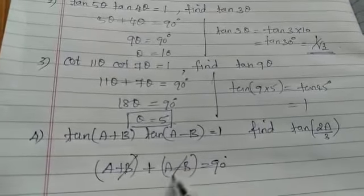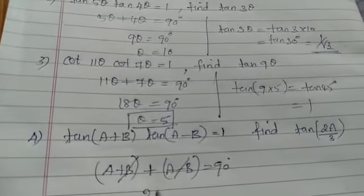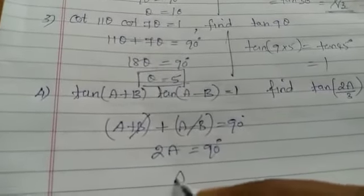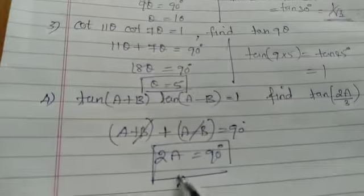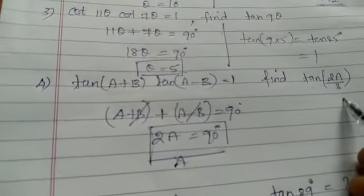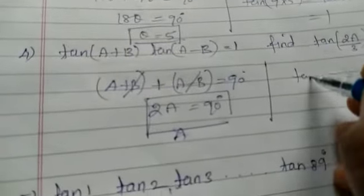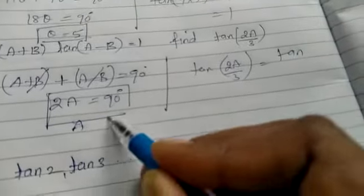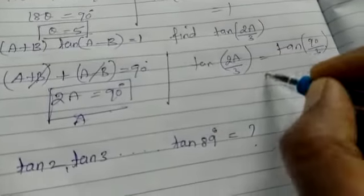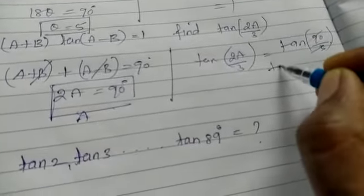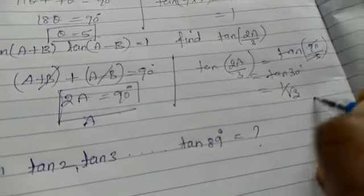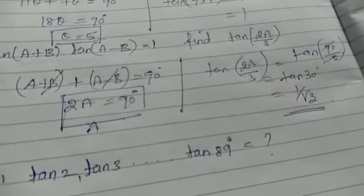So plus B minus B cancels, A plus A is 2A. So 2A equals 90 degree. 2A is sufficient because I want to find tan of 2A by 3. So tan of 2A by 3 equal to tan of 90 degree by 3, which is 90 by 3 equals 30. So tan 30 degree, which is 1 over root 3. So the answer is 1 over root 3. Okay.